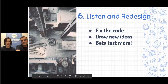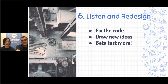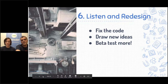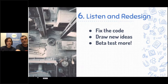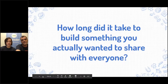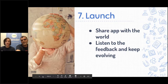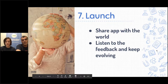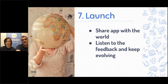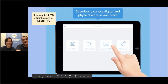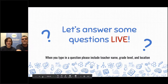Step six: listen and redesign. We listen to ideas and feedback from teachers and classrooms constantly. The thing about building software is you're never really done — you get a first version out and then have more ideas to add or change. We're always iterating. And then the last step is to launch: publish to the app store or make your website live, then start the whole cycle over again, constantly making it better.